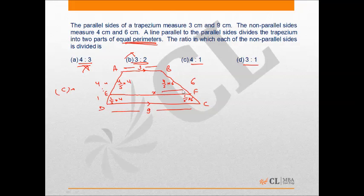EF, let's assume it is x. So the perimeter of the upper part will be 3 plus x plus 4/5 times 4 plus 4/5 times 6. This should be equal to the perimeter of the lower trapezium, which is 9 plus x plus 1/5 of 4 plus 1/5 of 6. x will be cancelled out here.